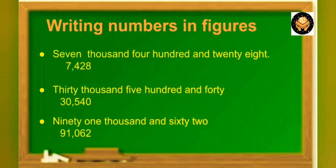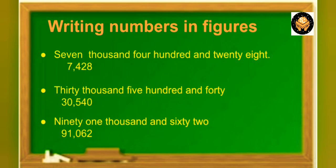Now let's see how to write numbers in figures by putting a comma. For 7,428: after 7, put a comma, then write 428. Second example, 30,540: after 30,000, put a comma and then write 540. Third example, 91,062: after 91,000, put a comma. As there are no 100s, write 0 in the 100 place and then write 62.